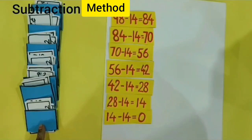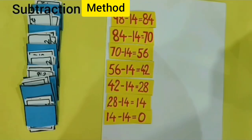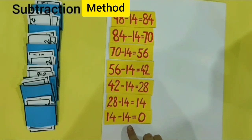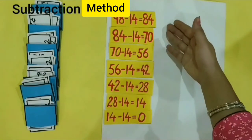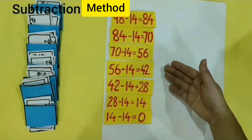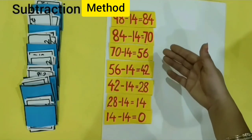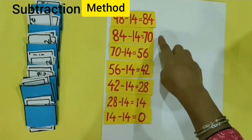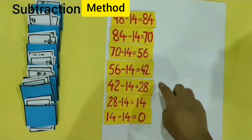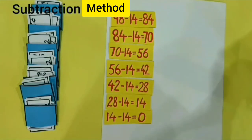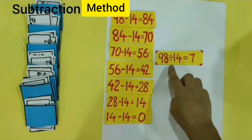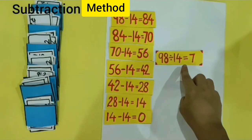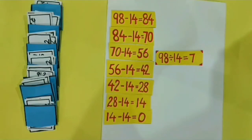After putting 14 rupees in the seventh card, I am left with nothing. 14 minus 14 is equal to 0. Students, you saw we used the repeated subtraction method of division and we did subtraction 7 times. Our answer is 98 divided by 14 is equal to 7.